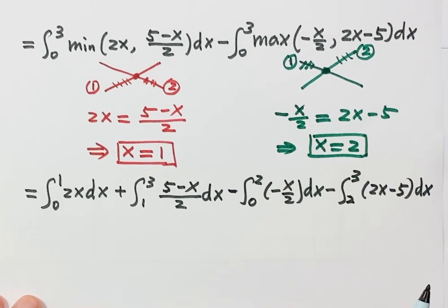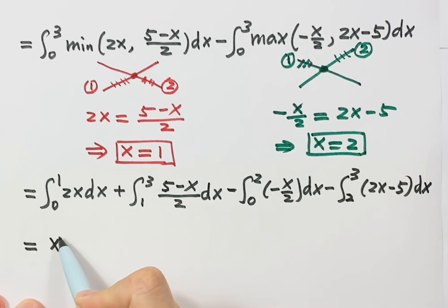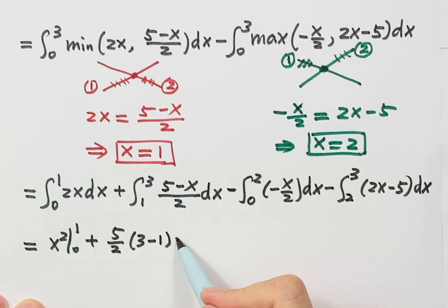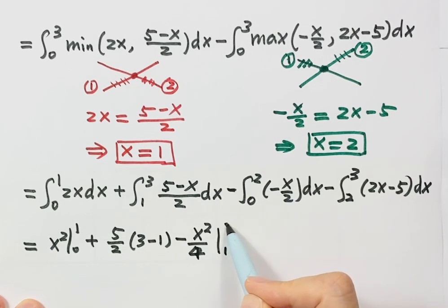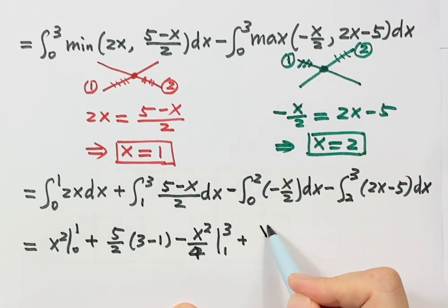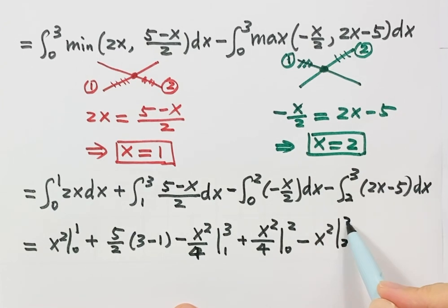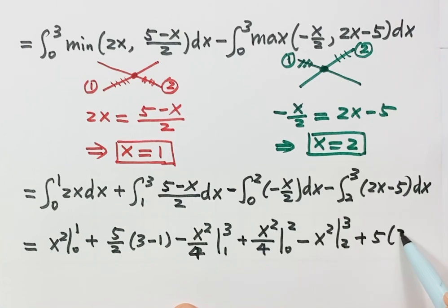Now let's evaluate each integral. The first piece gives x squared from 0 to 1. The second piece: 5 over 2 times (3 minus 1), then negative x squared over 4 from 1 to 3. Then, with the negative negative giving a positive, we have plus x squared over 4 from 0 to 2. Next, negative x squared from 2 to 3. The last piece, negative negative is positive, so plus 5 times (3 minus 2).